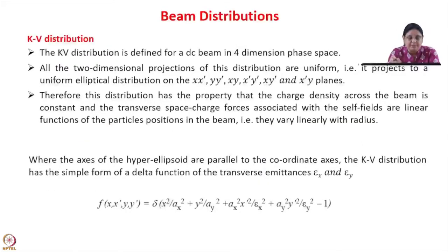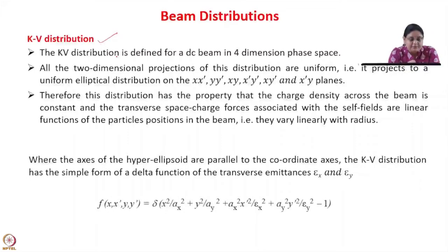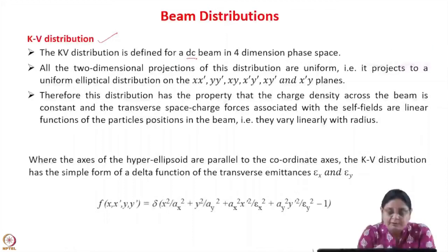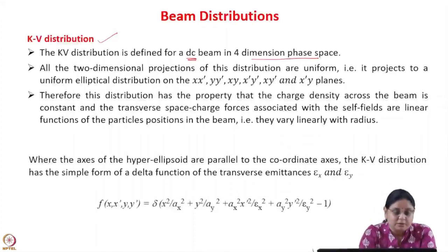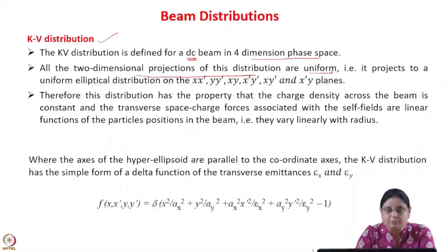Let us discuss some beam distributions. The simplest distribution is the KV distribution, which is defined for a DC beam in 4-dimensional phase space — x, x-prime, y, y-prime. All 2-dimensional projections of the KV distribution are uniform.